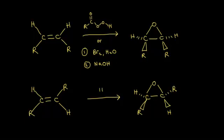In the last video, we saw two different ways to form an epoxide from an alkene. The first way was to add a peroxy acid. The second way was to first form a halohydrin using bromine water, and then use sodium hydroxide to start an intramolecular Williamson ether synthesis to form our epoxide. In this video, we'll look at the stereochemistry of epoxide formation for either of these two reactions.